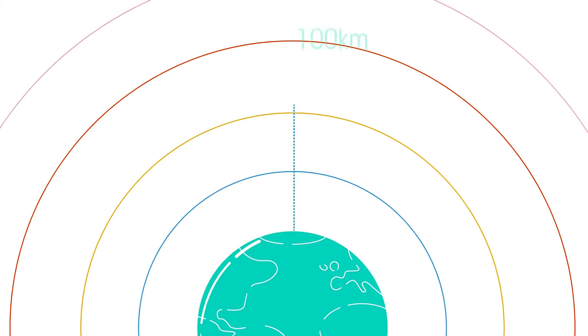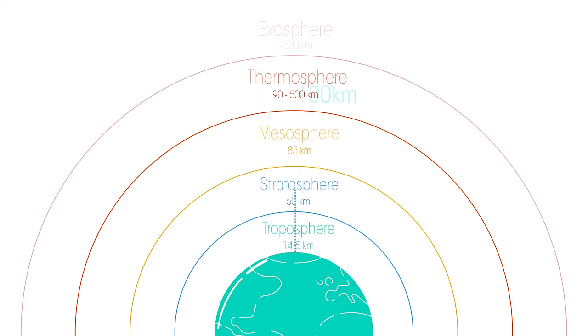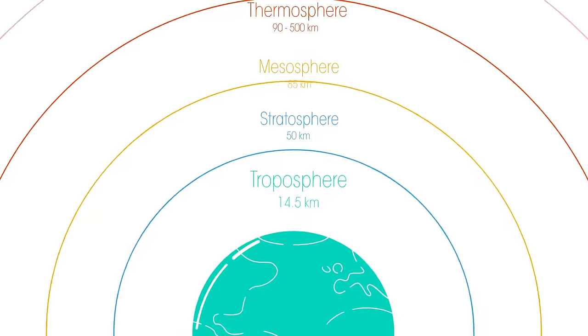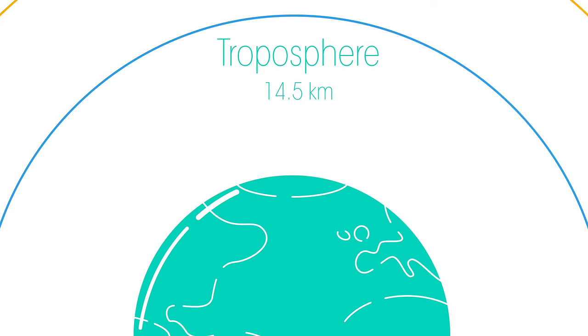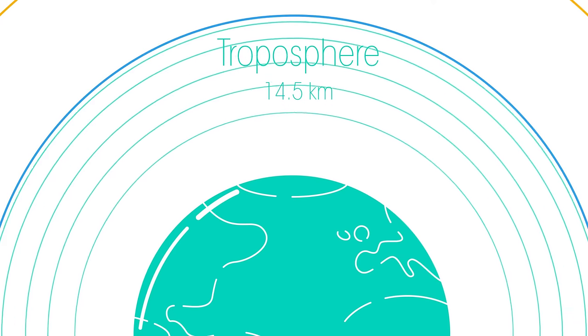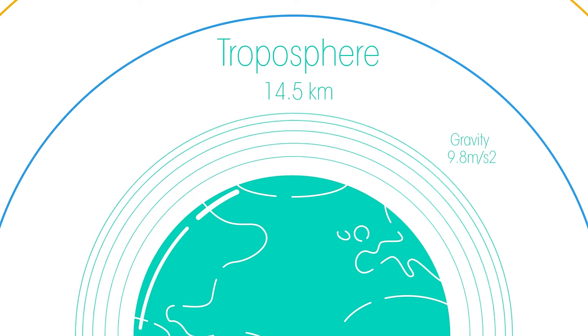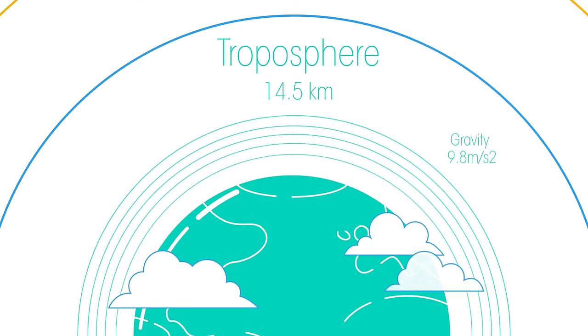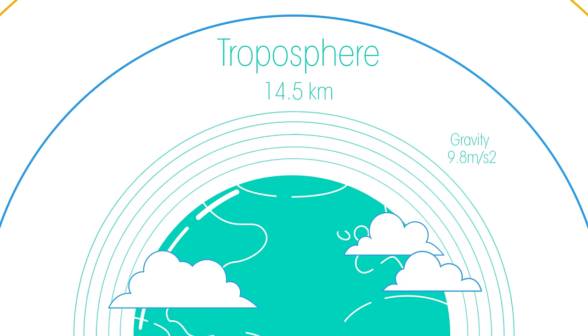The atmosphere is about 100 kilometres thick and is broken down into different layers. It starts with the troposphere, closest to the Earth, which extends to 14.5 kilometres. Thanks to gravity, this is the most dense part and is where the clouds are found. Nearly all of our weather happens in here.